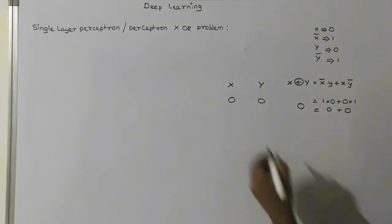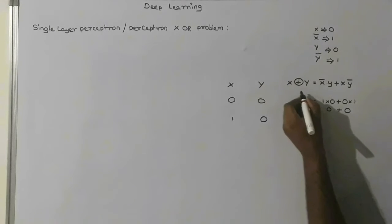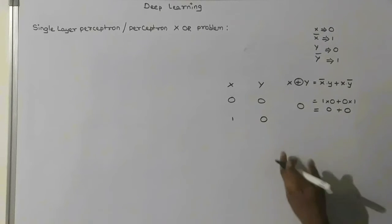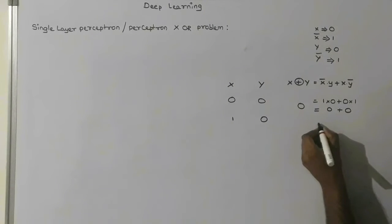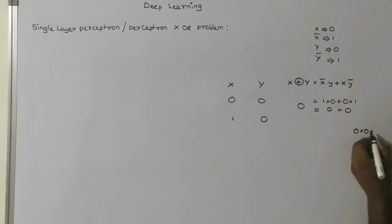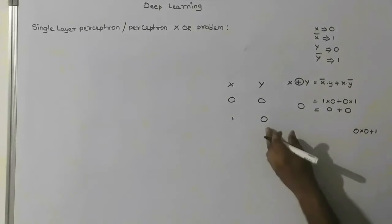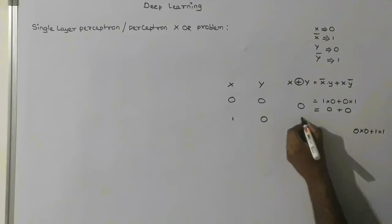Similarly, if x is 1 and y is 0, y-bar is 1. So x-bar is 0 into y is 0, plus x is 1 into y-bar is 1. That gives 0 plus 1, which equals 1.